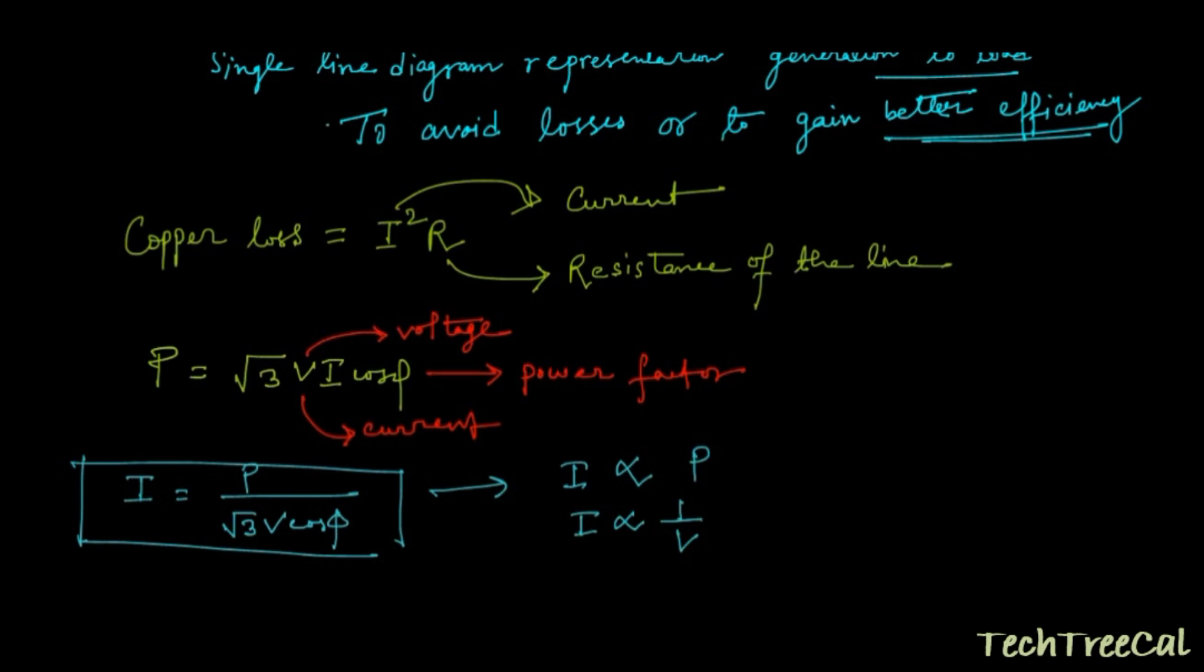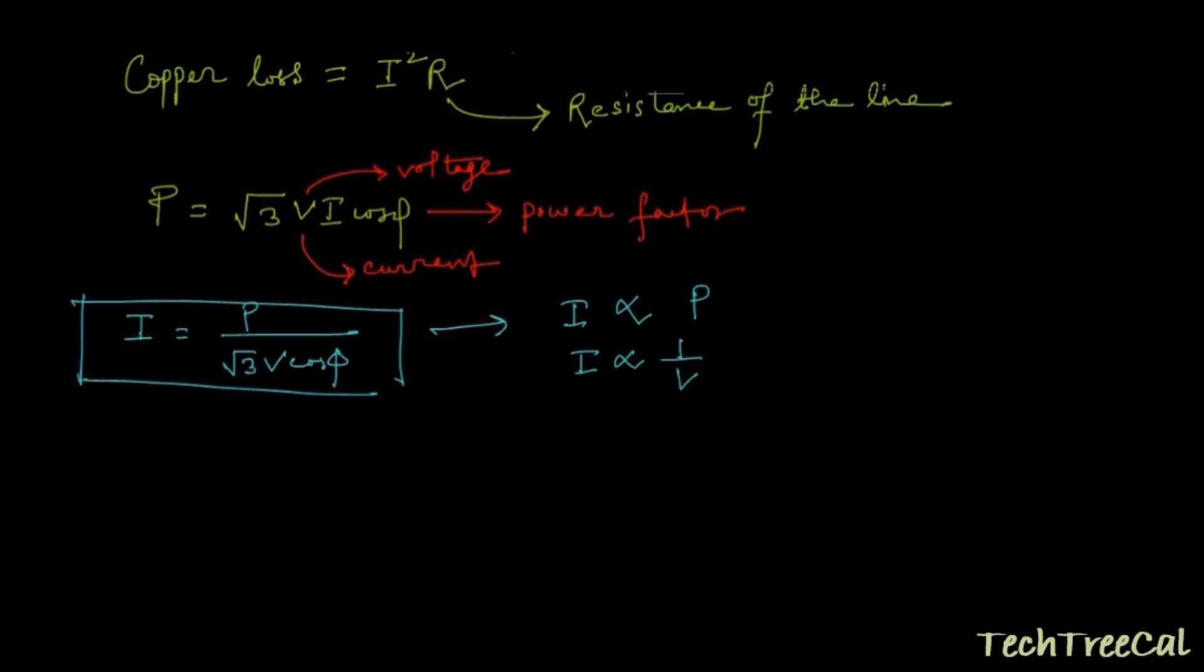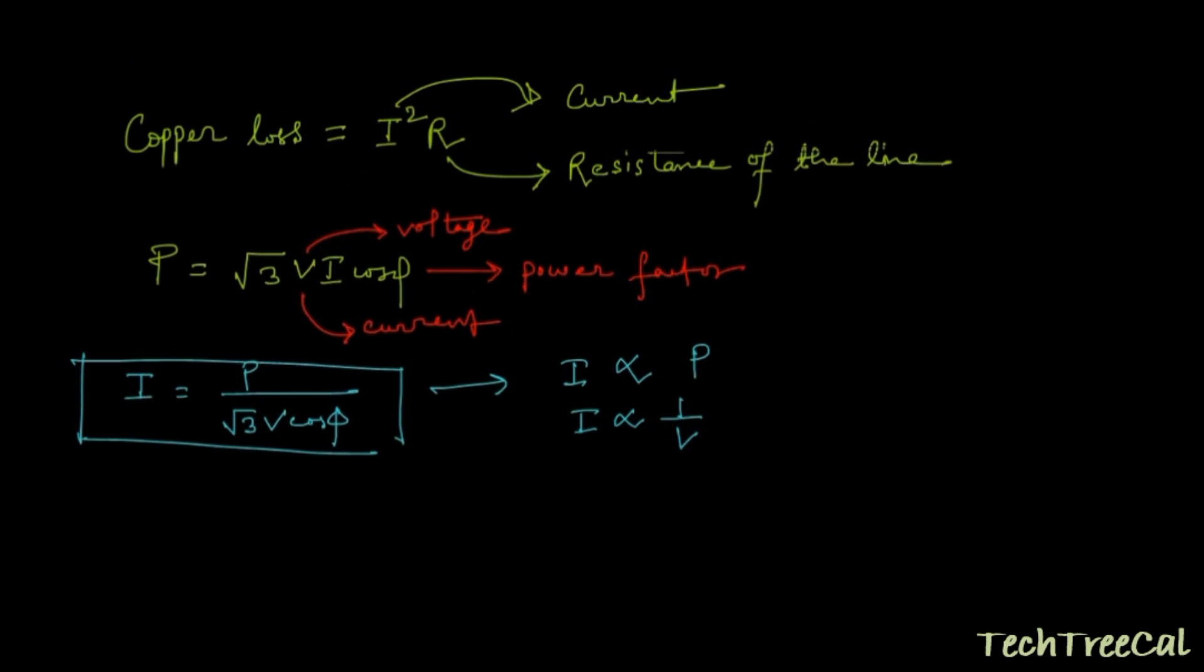That means whenever I am generating power at this generating station, suppose this is a 300 megawatt power generating station, this amount of power—300 megawatt—is constant. Your generated power is always constant.